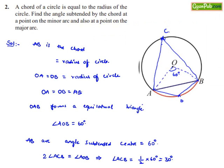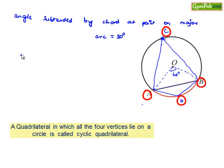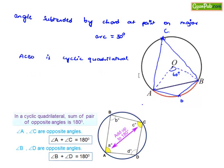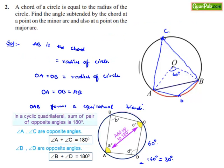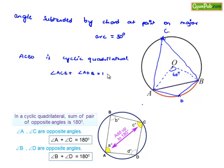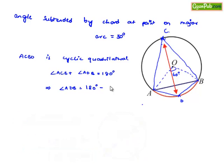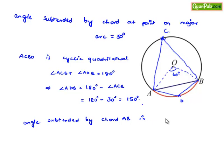Now, considering the figure, ACBD forms a cyclic quadrilateral since it is completely enclosed in the circle. We know that in a cyclic quadrilateral, the sum of opposite angles is equal to 180 degrees. Therefore, angle ACB plus angle ADB equals 180 degrees. This gives angle ADB equal to 180 degrees minus angle ACB, which is 180 minus 30, equal to 150 degrees. Therefore, the angle subtended by chord AB at a point on the minor arc is 150 degrees.